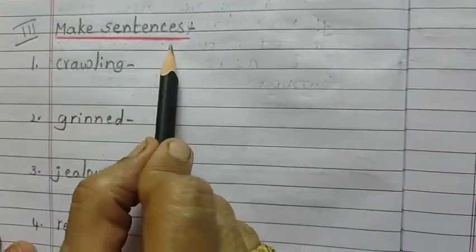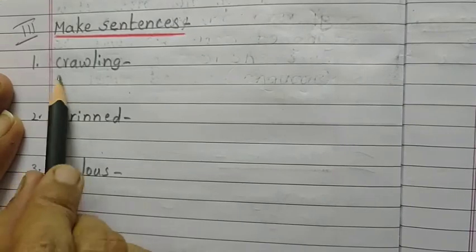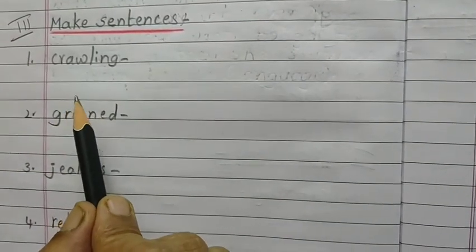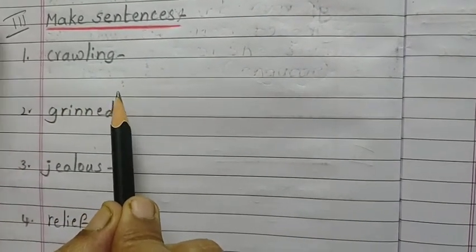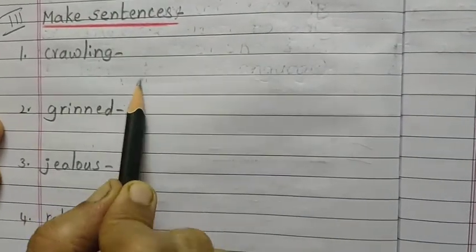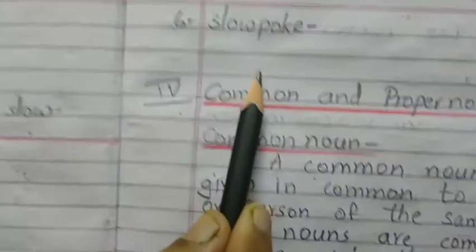Leave one line. Make sentences — we are going to write sentences for the keywords: crawling, grinned, jealous, relief, screamed, and in the next page, slow poke. Leave two lines between each.